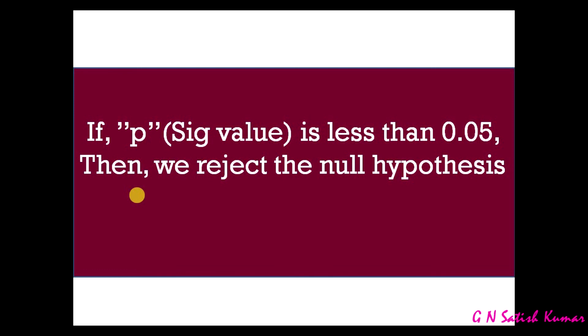The important question is, why I am taking 0.05? Because my confidence interval is 95%. That is why, if the p-value is less than 0.05, then we reject the null hypothesis.